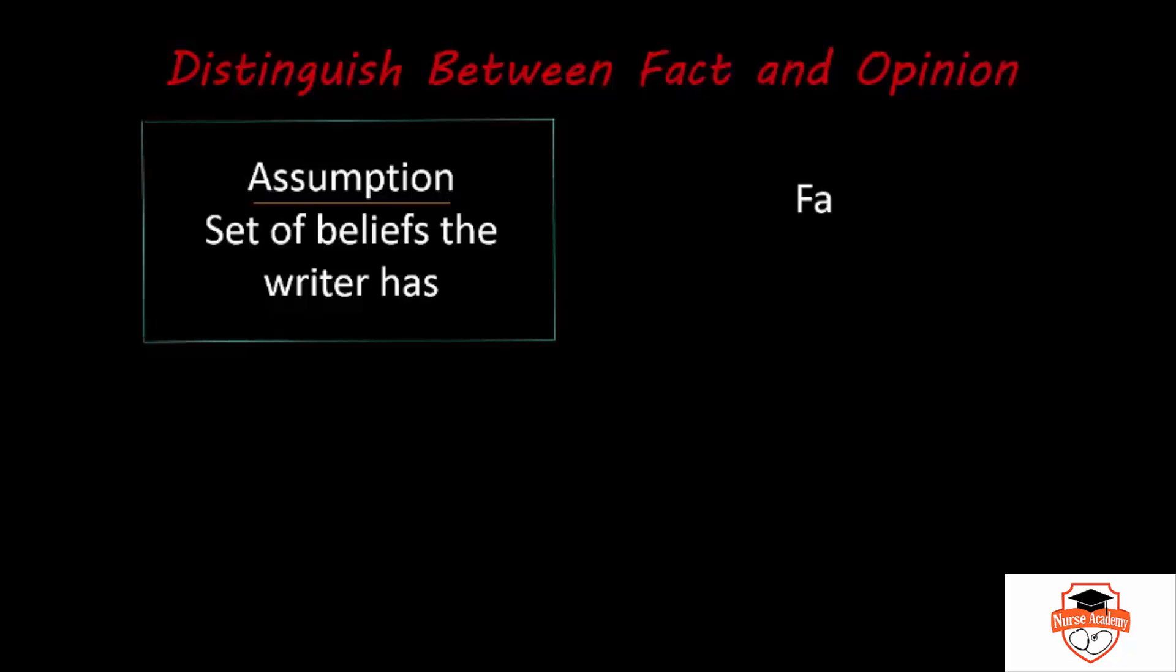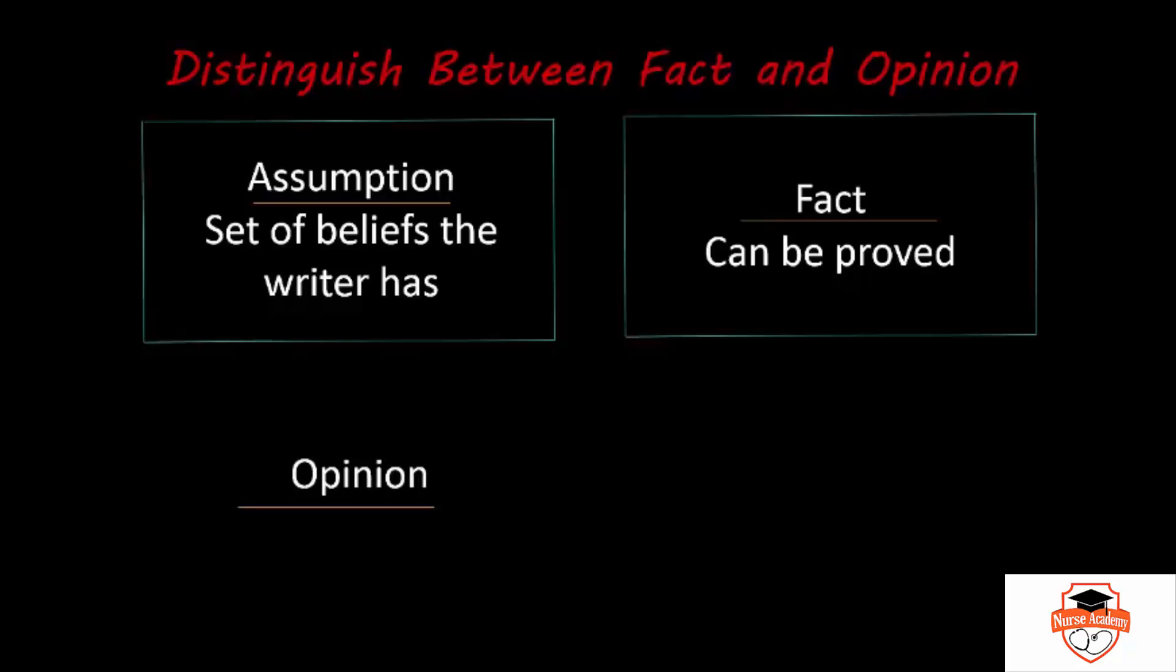Next, we'll go over the difference between a fact and an opinion. A fact can be proved. That is a major thing about a fact. It can be proved. Next, let's look at an opinion. And the difference between a fact and an opinion is that an opinion cannot be proved. That is why it's an opinion.